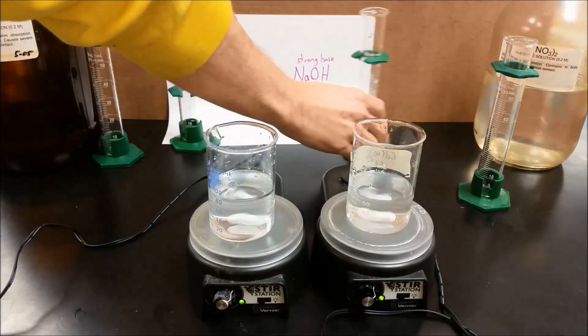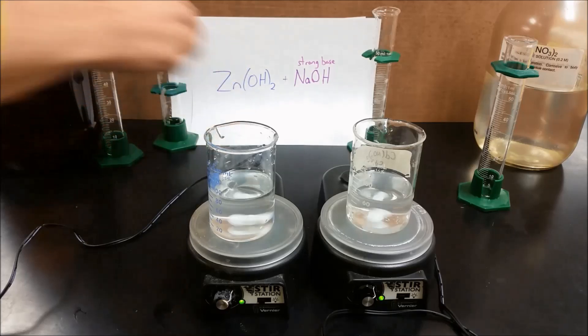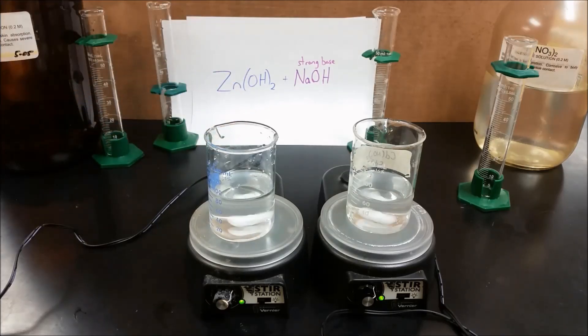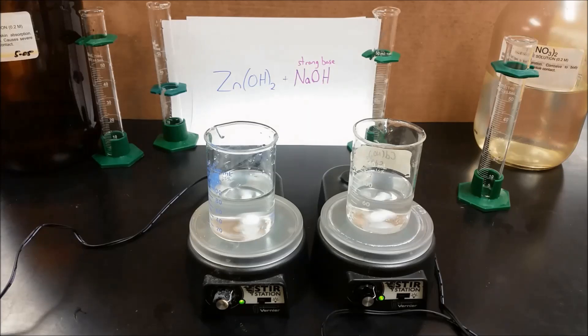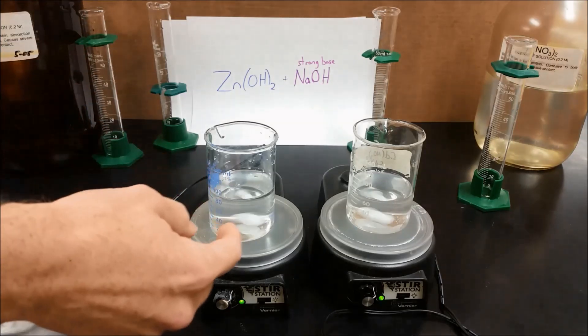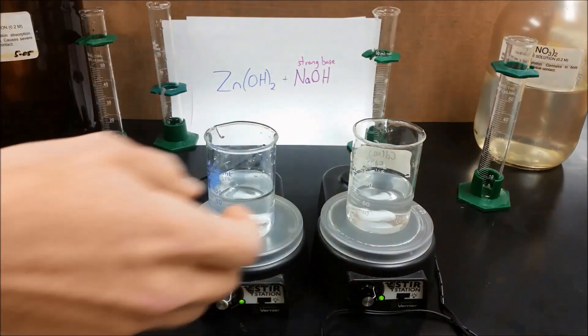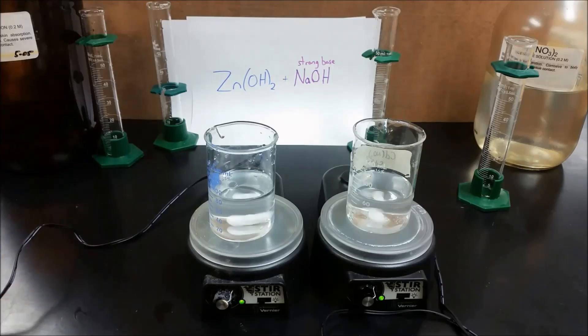And so therefore, what we're seeing is that there's some kind of reaction between the zinc hydroxide and the sodium hydroxide. So if a strong base is reacting with the zinc hydroxide, that would therefore make the zinc hydroxide an acid. And so zinc hydroxide is an example of a compound that can act as an acid and as a base. And therefore, we call that an amphoteric substance.